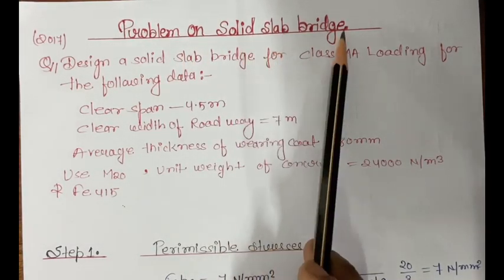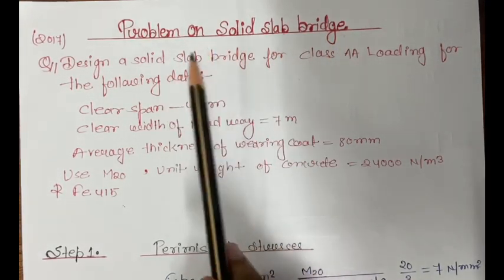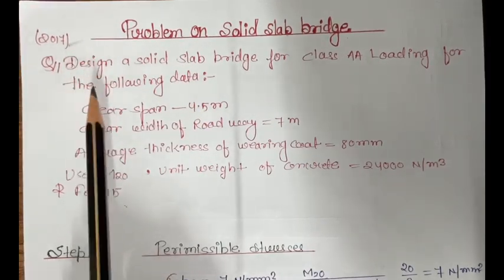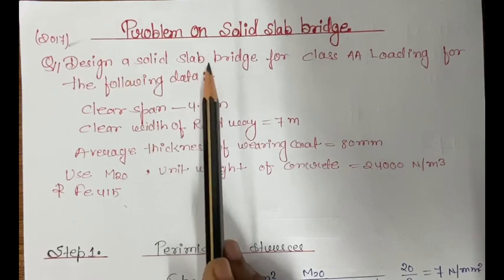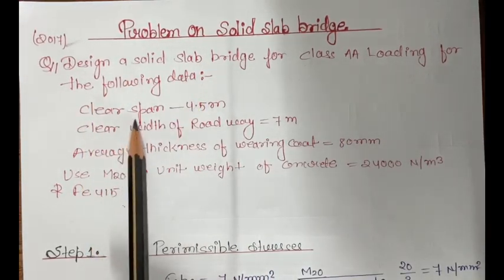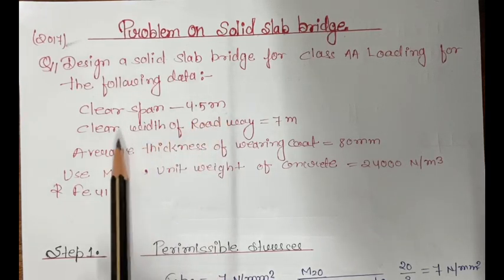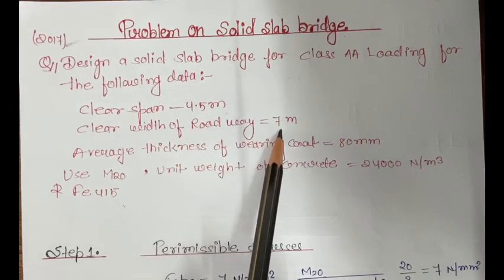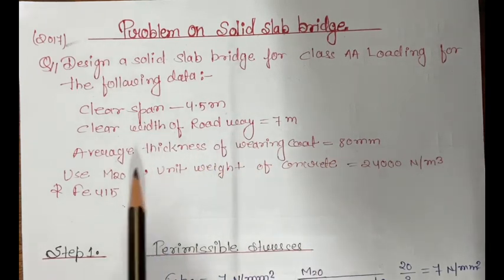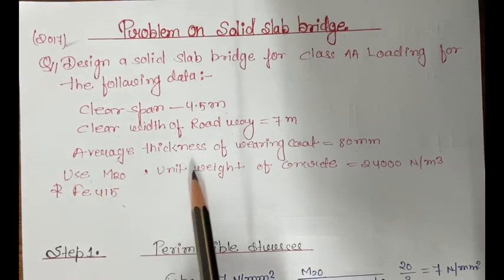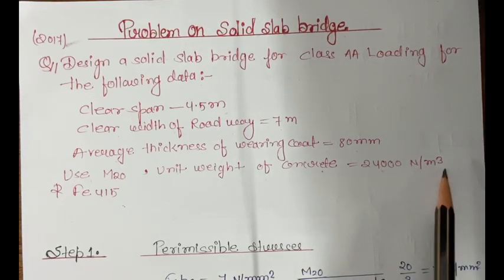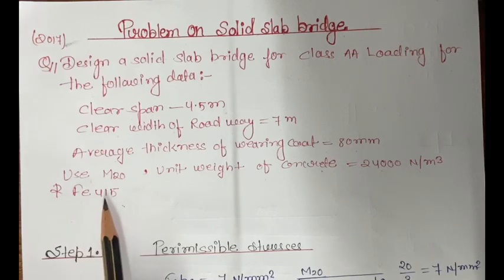This is the problem on the solid slab bridge, given in your previous year 2017 question paper. Design a solid slab bridge for Class A loading with the following data: clear span 4.5 meter, clear width of road 7 meter, average thickness of bearing coat 80 mm. Use M20 concrete with unit weight 2400 Newton per meter cube and Fe 415 steel.